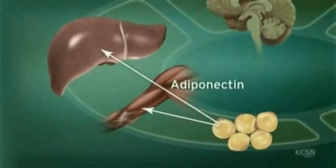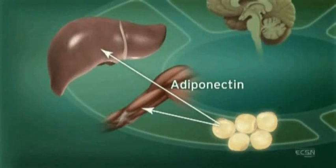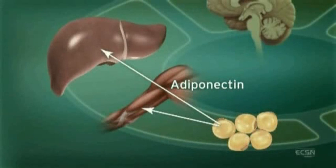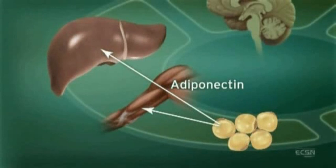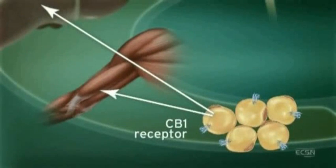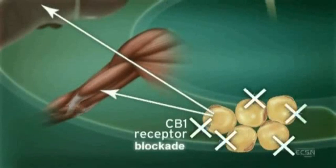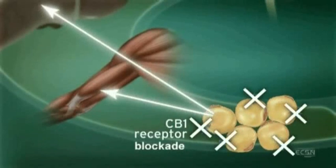Adiponectin, another hormone secreted by adipocytes, regulates lipid and glucose metabolism. Adiponectin is believed to regulate fatty acid oxidation in muscle and liver, thus improving insulin sensitivity. CB1 receptor stimulation in adipocytes reduces adiponectin, while CB1 blockade increases adiponectin synthesis.